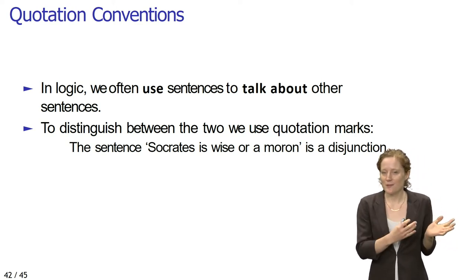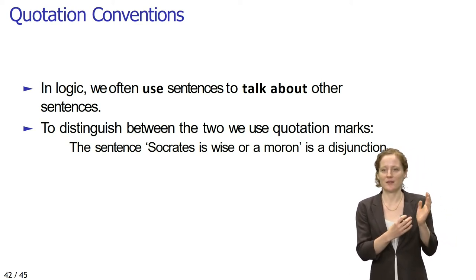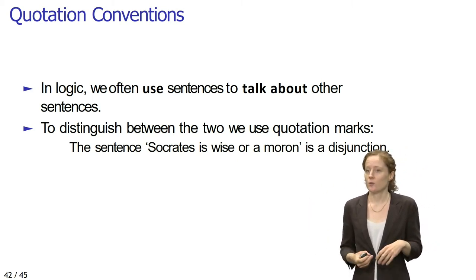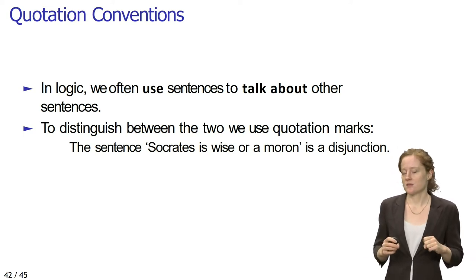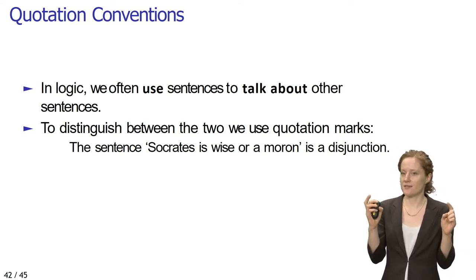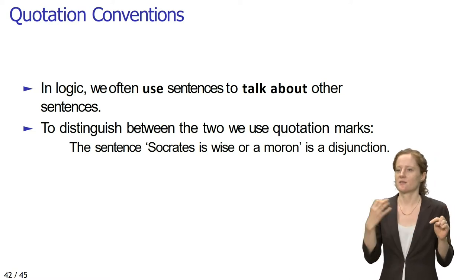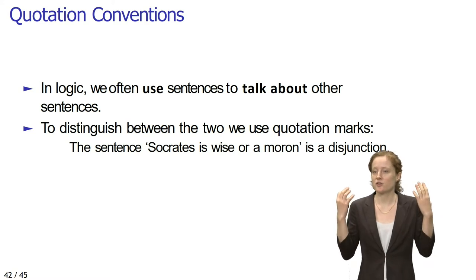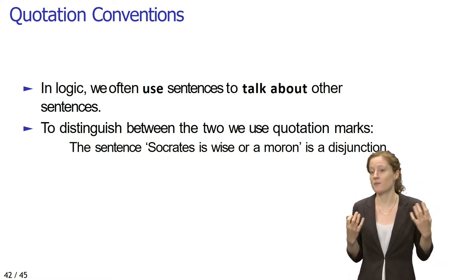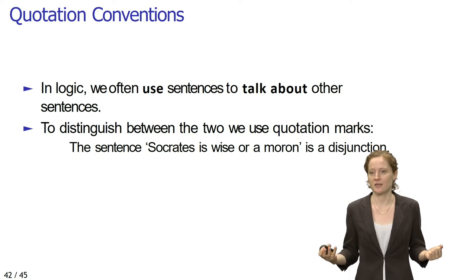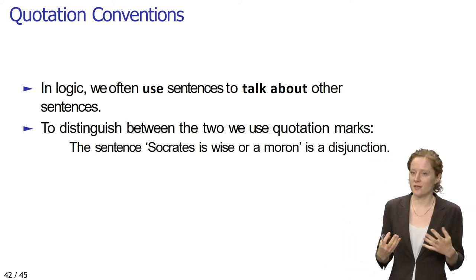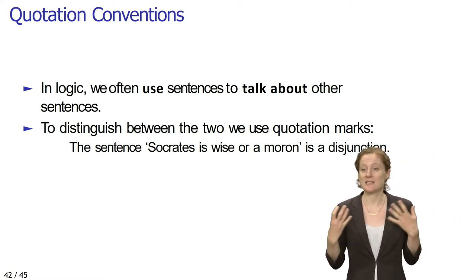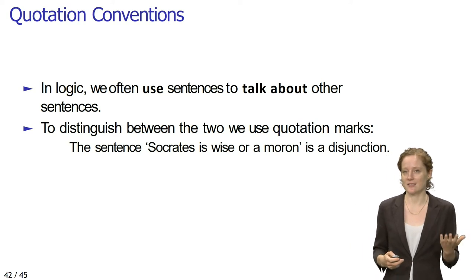In order to distinguish between the sentence that we are using and the sentences that we are mentioning or talking about, we use quotation marks. The quotation marks around 'Socrates is wise or a moron' signal that here we are talking about a sentence or mentioning it, but not using it. So I'm not literally asserting that Socrates is either wise or a moron — I'm just mentioning the sentence in order to say something about it, namely that it is a disjunction.